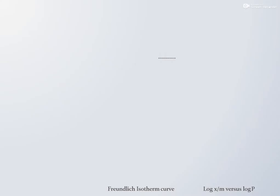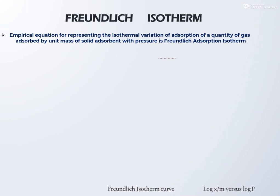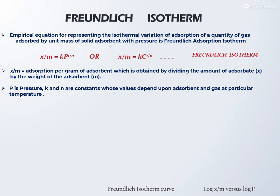The Freundlich isotherm is an empirical equation representing the isothermal variation in the quantity of gas adsorbed by unit mass of solid adsorbent with pressure. It is represented by the equation: x/m = K × p^(1/n) or c^(1/n), where x/m is the amount of adsorbate per gram of adsorbent, p is the pressure, and K and n are constants depending on the adsorbent and gas at a particular temperature. Taking the log of this equation gives: log(x/m) = log K + (1/n) × log p.